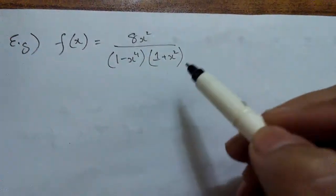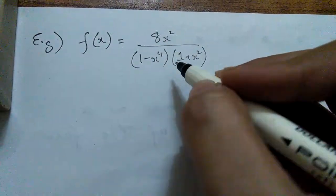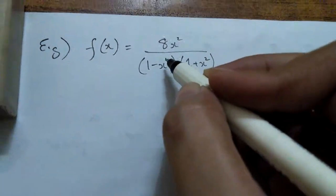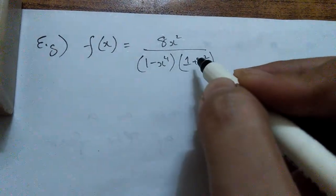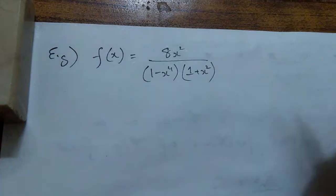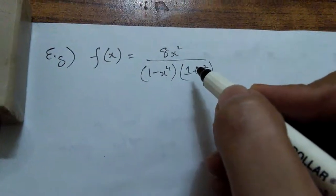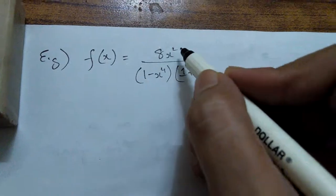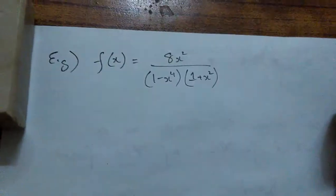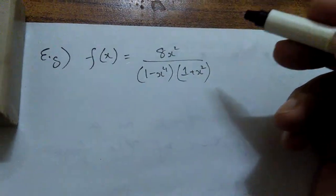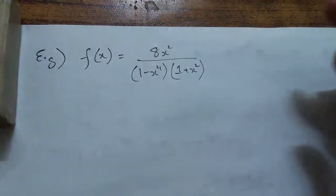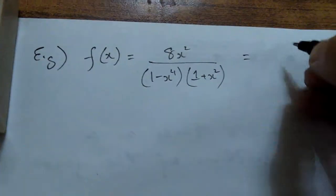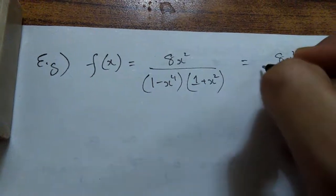Here is an example — a very interesting one. You have a function where one factor is quadratic and the other is quartic in nature. Once you multiply these two factors, the combined expression has degree 6, while the numerator has degree 2. Since 6 is greater than 2, this is a proper rational algebraic function. So we simply move ahead, resolve the denominators, and split into partial fractions.